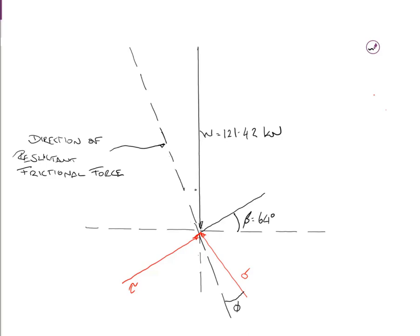In our case, beta was 45 plus phi over 2, which is 64 degrees. I've drawn in beta here. You'd do it to scale, I haven't.